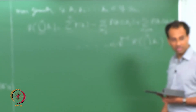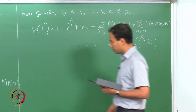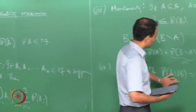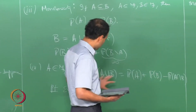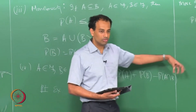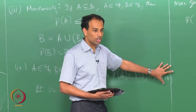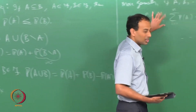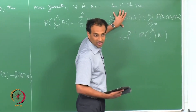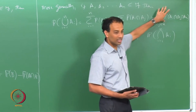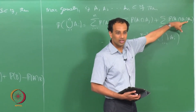Now we extend to more events. When you had disjoint events, probability of A union B is probability of A plus probability of B. Now, if they are not necessarily disjoint, if you just add their probabilities you are overcounting. So you subtract the intersection. Similarly, when adding all probabilities of n events, you subtract all pairwise intersections — but then you have taken out too much — so you add back the three-way intersections, and so on.